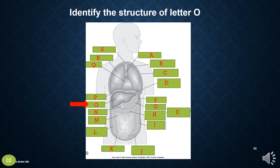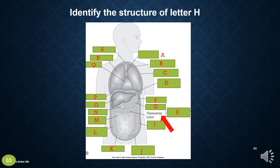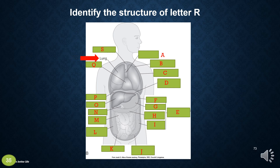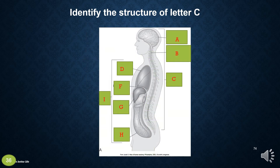Identify the structure of letter O — that is the liver. What about letter H? That is the transverse colon. Identify the structure of letter A — A is the mediastinum. Identify the structure of letter R — R is the right lobe of the lung. Identify the structure of letter C — C is the dorsal cavities.